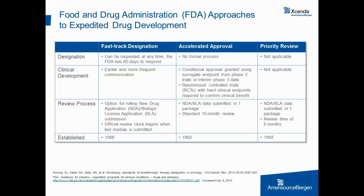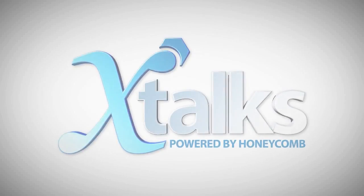This slide looks at the three programs in more detail. Regarding fast track designation, it entails early and frequent communication between the FDA and the sponsor. Under this program, a sponsor may submit sections of the new drug application as they are ready — referred to as rolling review — rather than the standard requirement to submit one complete application in a single submission.